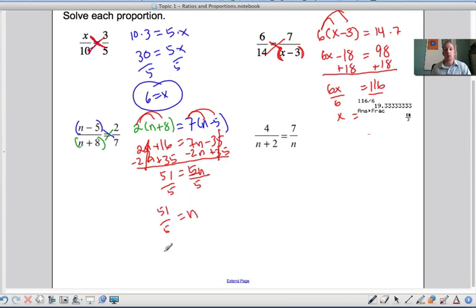And if you plug that into your calculator, you just get a 10.2. So either one of those is correct. One last example here: n plus 2 times 7 equals 4 times n. So 4n equals 7 times n plus 2.